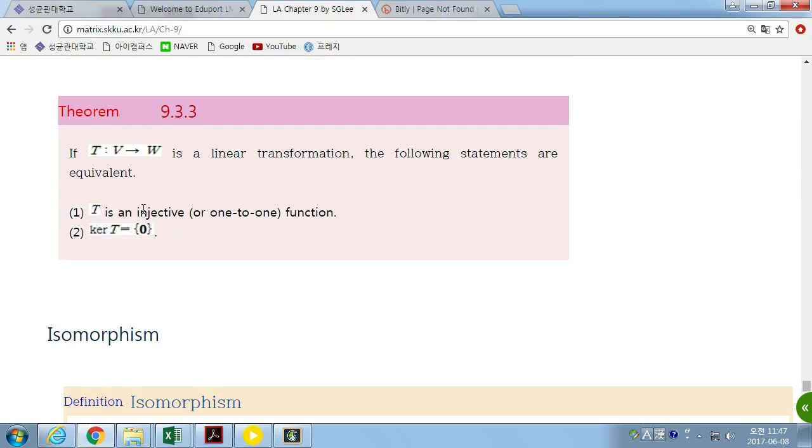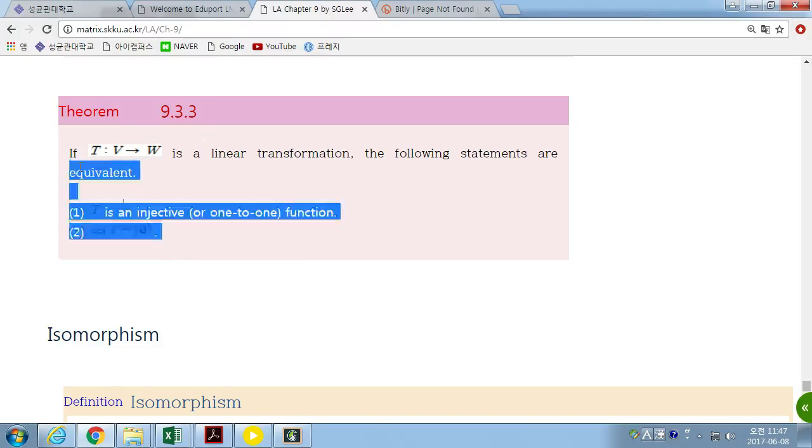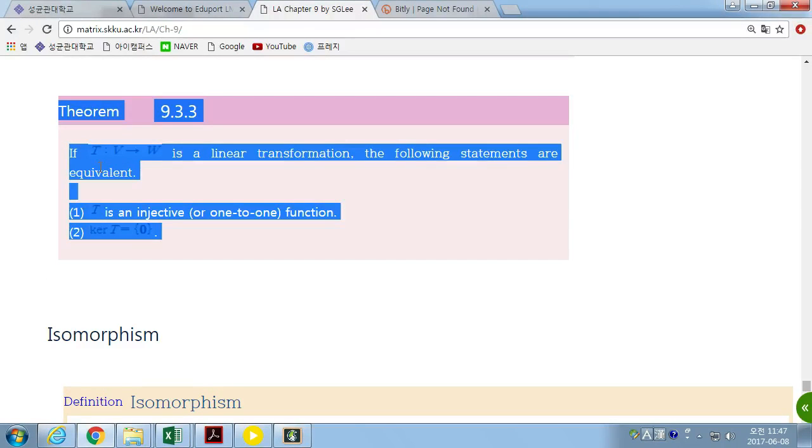We know if the linear transformation T is injective if and only if the kernel of T is a singleton vector, zero vectors. We have learned it. Same theory. Same theory. Same fact for R and here work in V.